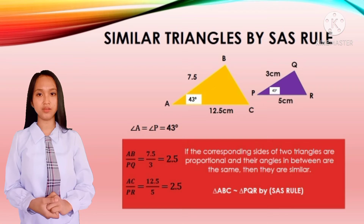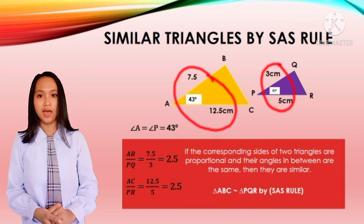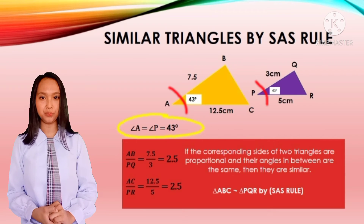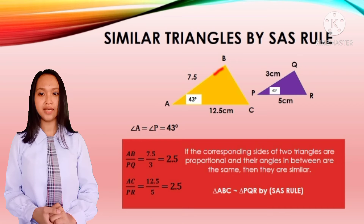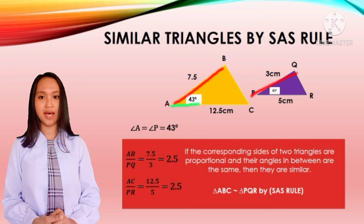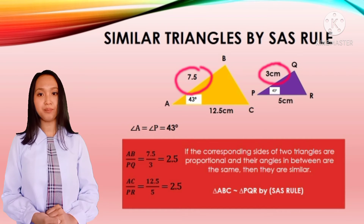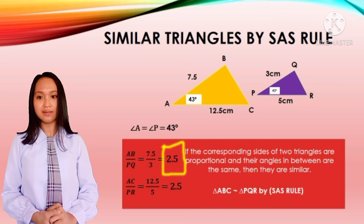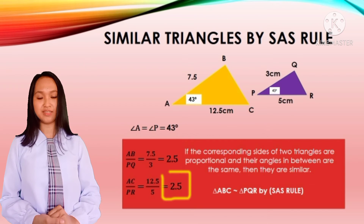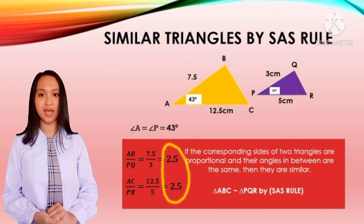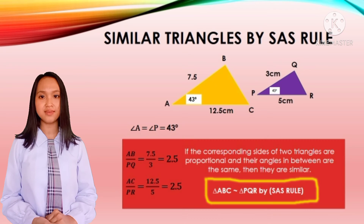Example: triangle ABC and triangle PQR. As you can see, there are two sides given and one angle in between them. Angle A and angle P have the same value, which is 43 degrees. Now let's determine the matching sides and their ratios: side AB and side PQ, side AC and side PR. Side AB is 7.5 and side PQ is 3, so 7.5 divided by 3 is 2.5. Side AC is 12.5 and side PR is 5, so 12.5 divided by 5 is 2.5. They have the same ratios, therefore triangle ABC is similar to triangle PQR by SAS rule.